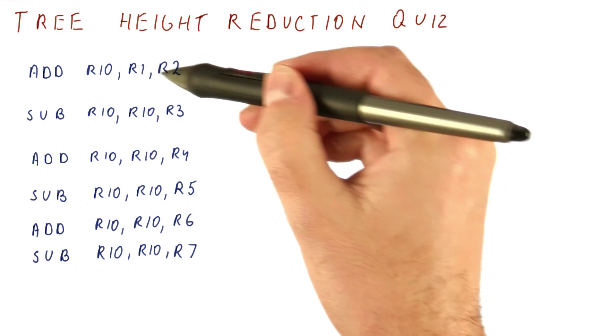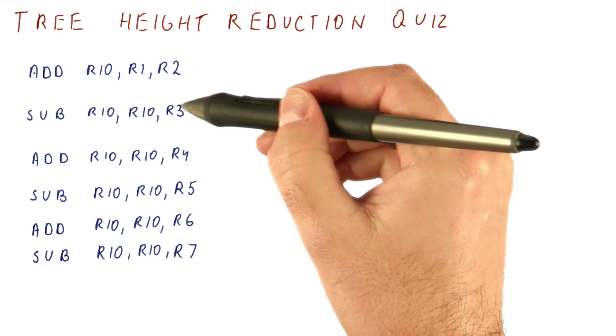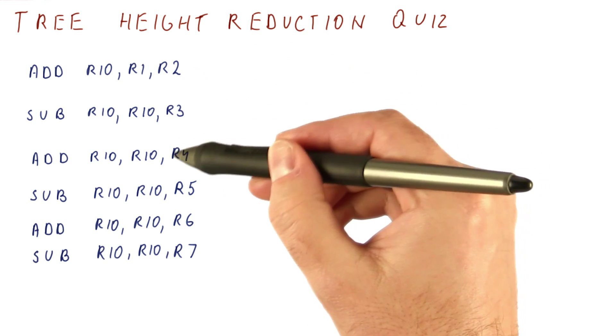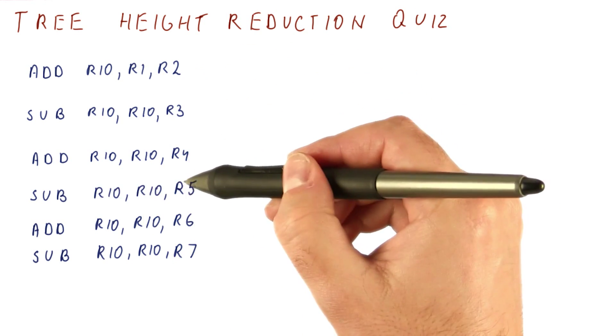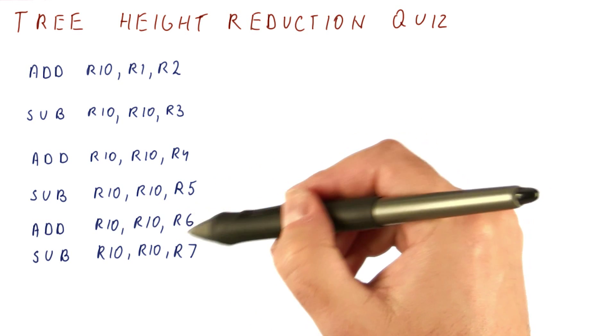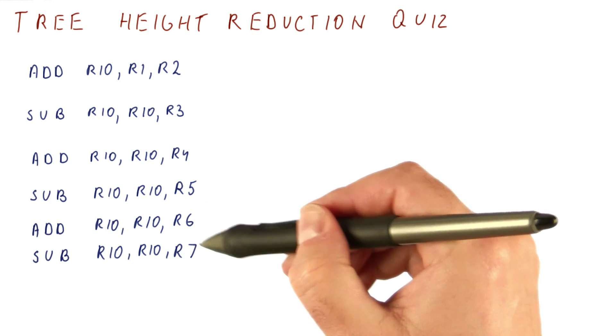We are adding R1 and R2, putting the result in R10, then subtracting R3 from that, then adding R4, then subtracting R5, then adding R6, and then subtracting R7.